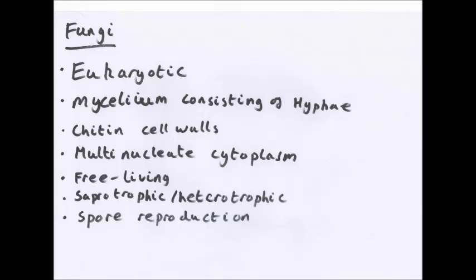Fungi, yet again, no drawing for that. They're eukaryotic. They have something called mycelium, which consists of hyphae. Hyphae are just like the structure of the fungi, so just like little strands running throughout it. Now, these ones have chitin or chitin cell walls. They have a multi-nucleate cytoplasm. This just means that they have more than one nucleus per cell. They are free living, and they are also saprotrophic. This is, they kind of live on decaying matter, though they can be heterotrophic, which is they take in food from other organisms. And they're also reproduced by spores. Most common, there are a few different ways, but the majority of them really spores like seeds.